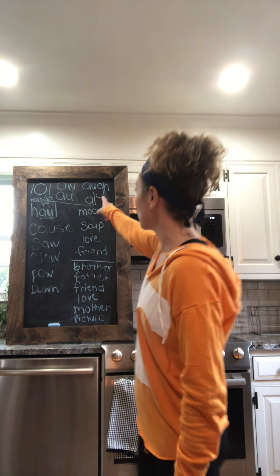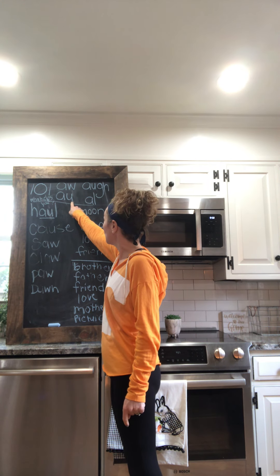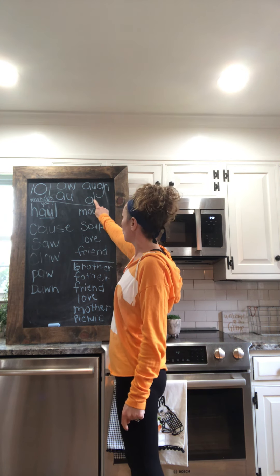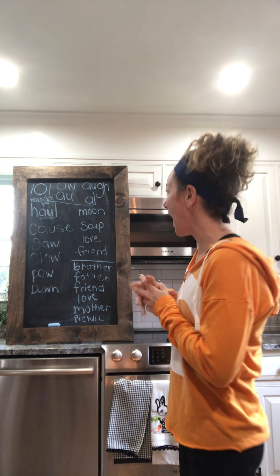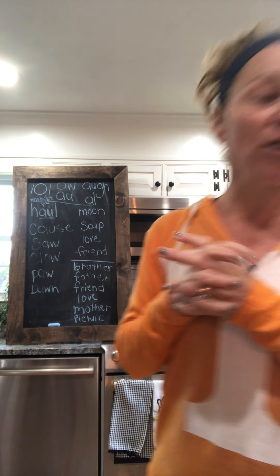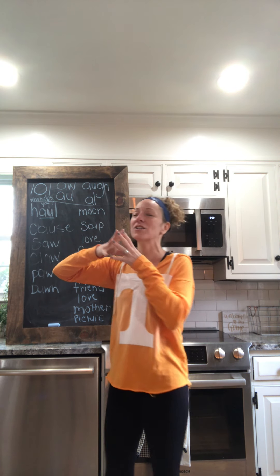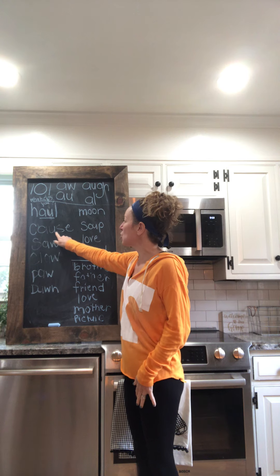We're going to start our day off with a lot of information. First, we're going over your new letter sound, which is the 'AWL' sound. It can be spelled as 'aw,' 'au,' 'ugh,' or 'al' — those are all the ways you hear that sound. When two vowels go together they are called vowel teams, and they have to stay together in that syllable — you never break them up.